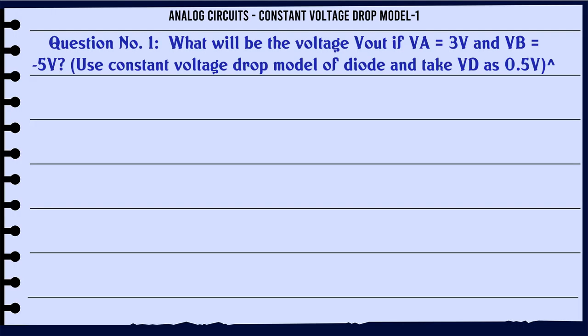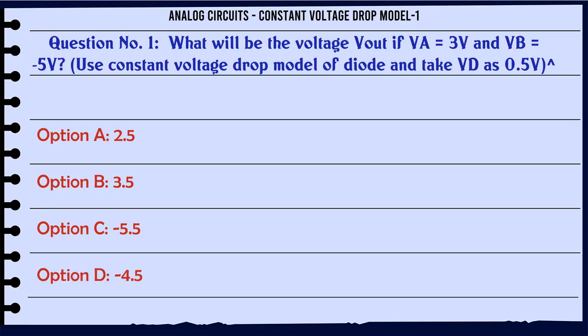What will be the voltage Vout if VA = 3V and VB = 5V? Use constant voltage drop model of diode and take Vd as 0.5V. Options: A) 2.5, B) 3.5, C) 5.5, D) 4.5.